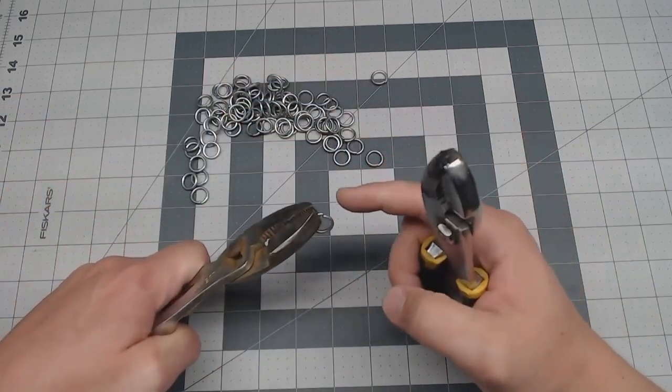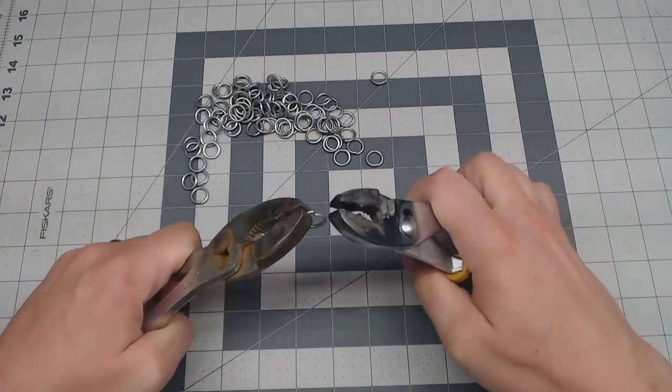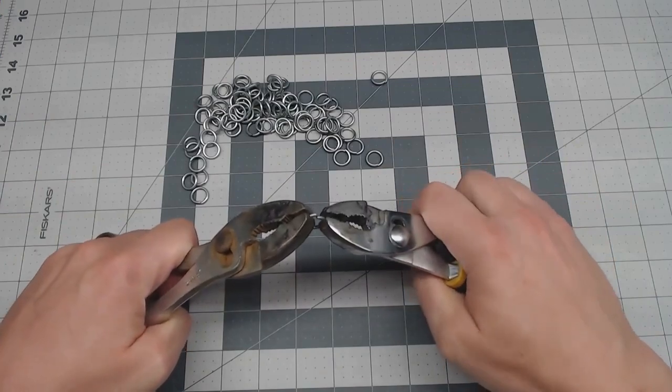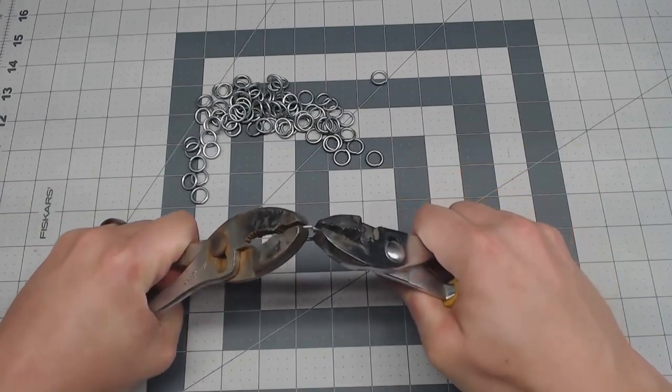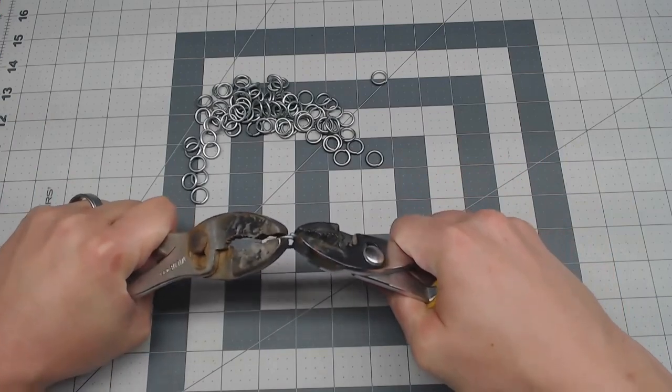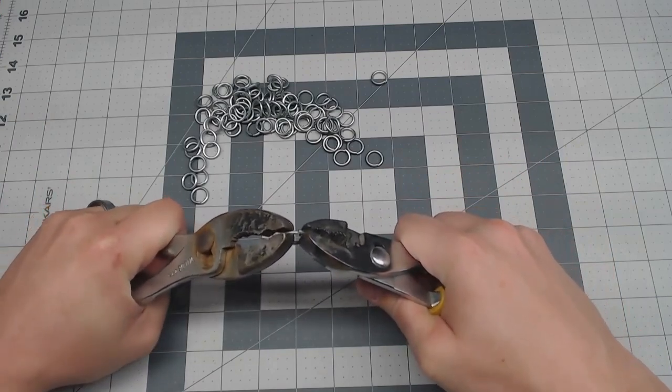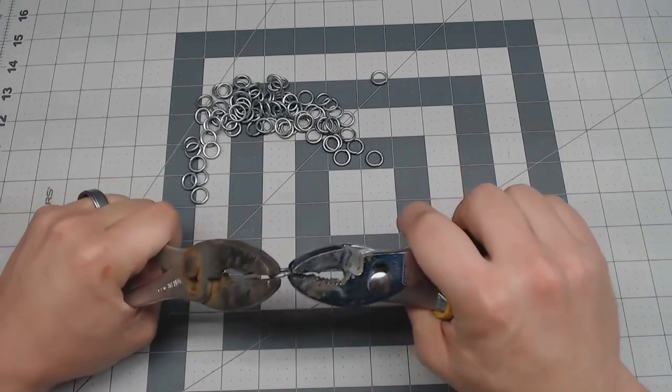Okay, so first off when you're opening and closing these, you want to keep the pliers as close to the cut as possible. When you go to close it, push it past where it goes and then push it closed a little bit, and it should spring back a little bit on its own depending on what metal type you're using.